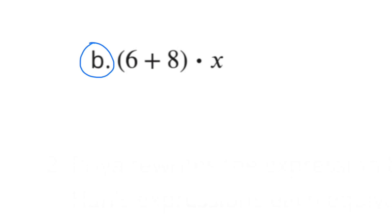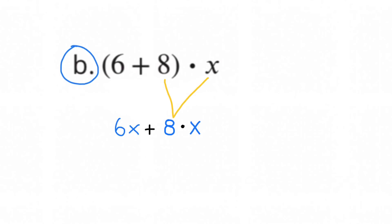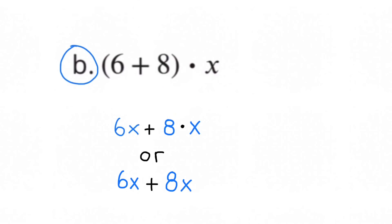B. (6 plus 8) times x. x times 6, or 6 times x, is 6x. Bring down the plus sign, and x times 8, or 8 times x, is 8x. So the equivalent expression would be 6x plus 8x.